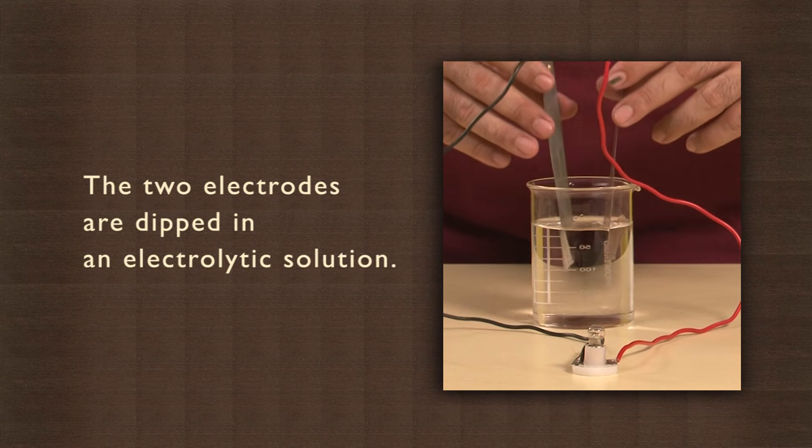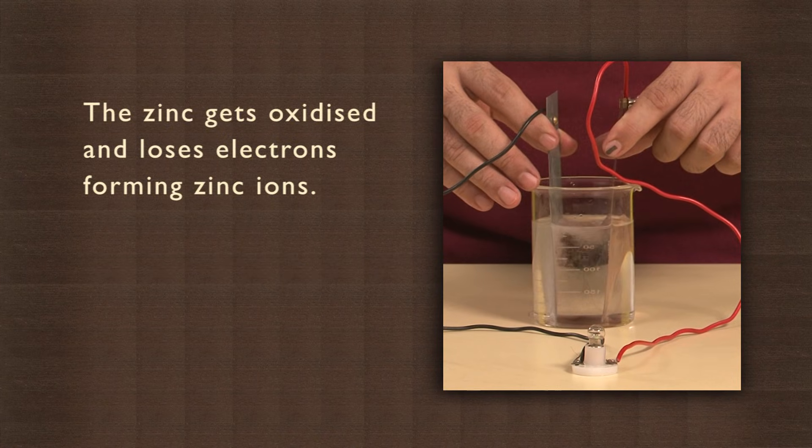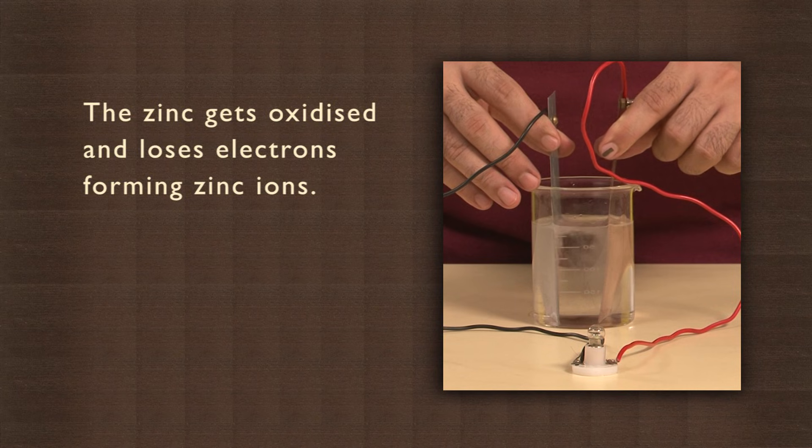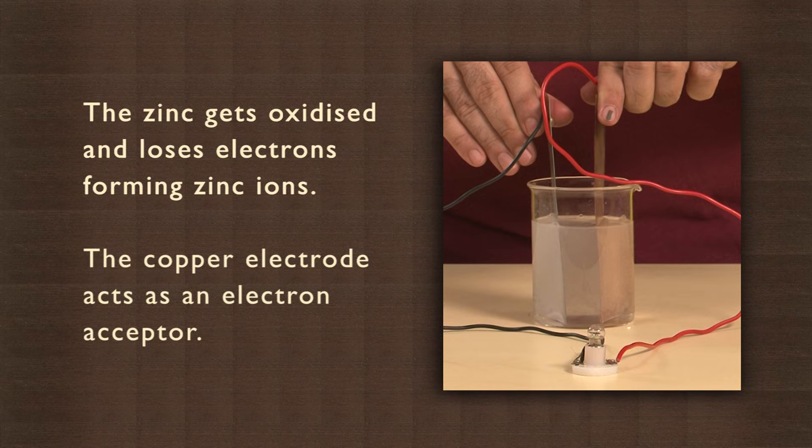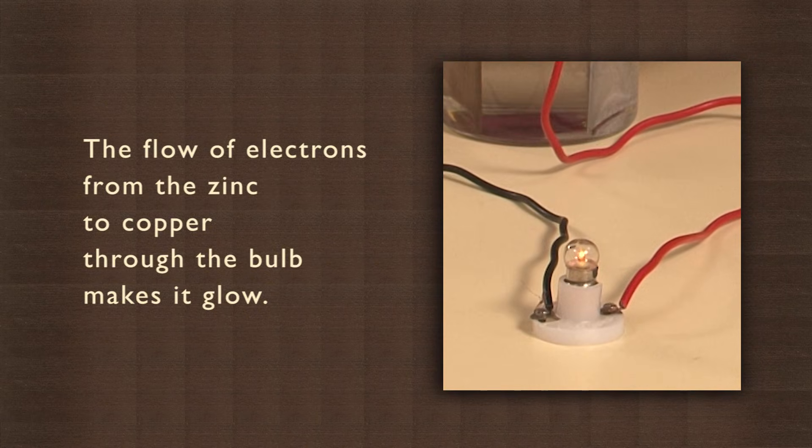How do you think this happened? The two electrodes are dipped in an electrolytic solution. The zinc gets oxidized and loses electrons forming zinc ions. The copper electrode acts as an electron acceptor. The flow of electrons from zinc to copper through the bulb makes it glow.